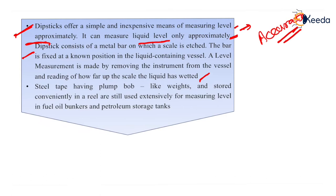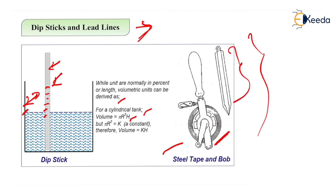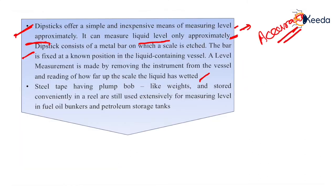The steel tape and bob type has plumb-bob-like weights and is stored conveniently on a reel. It is still used extensively for measuring level in fuel oil bunkers and petroleum storage tanks.